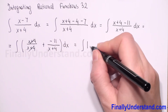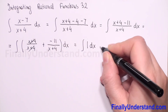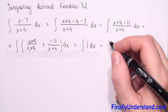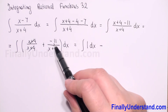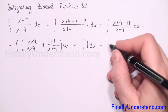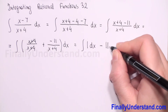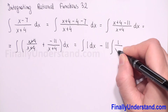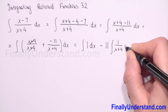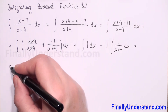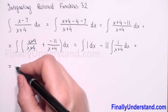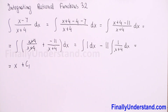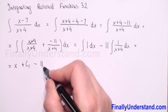We have the integral of (x plus 4) over (x plus 4), which we can reduce, leaving only the integral of 1 with respect to x. Next, because we have a positive and a negative, I can pull out negative 11 before the integral of 1 over (x plus 4) with respect to x. The integral of 1 is x, plus constant c1.